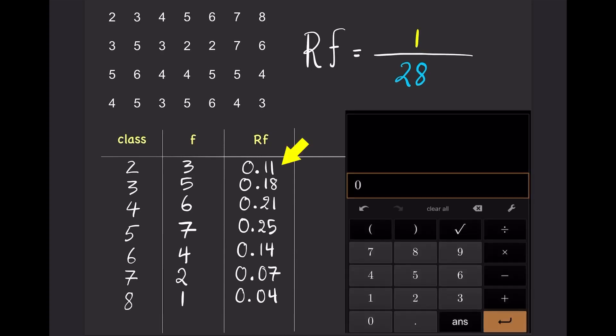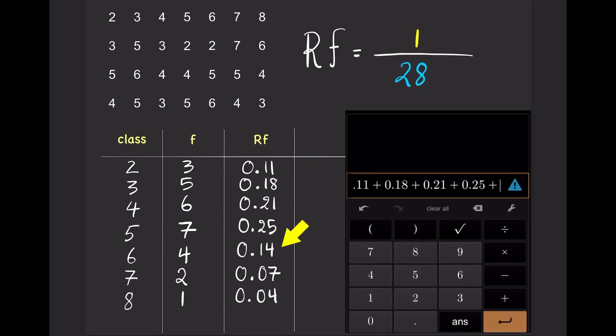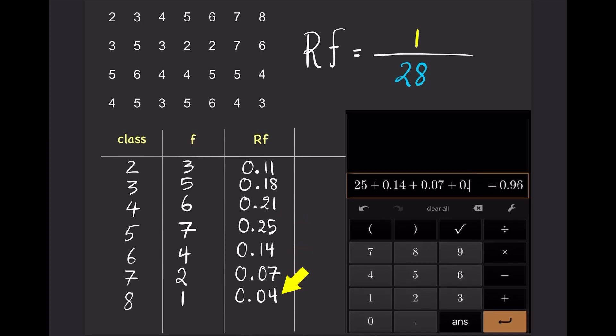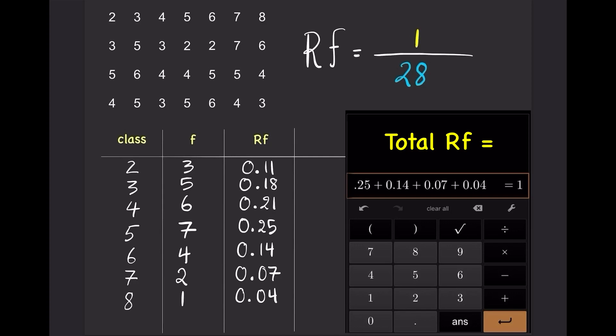Add up the relative frequency from each class, and the total should be 1, or very close to 1, due to rounding errors from each step.